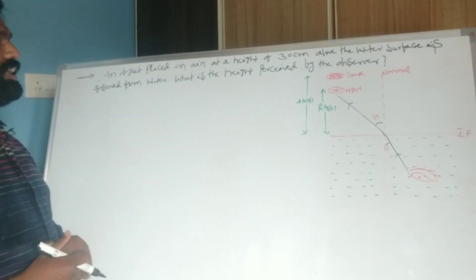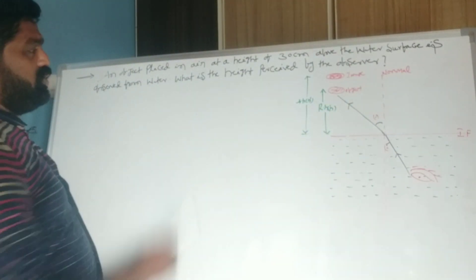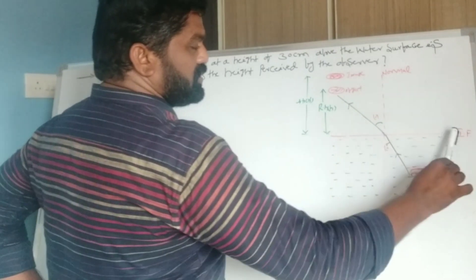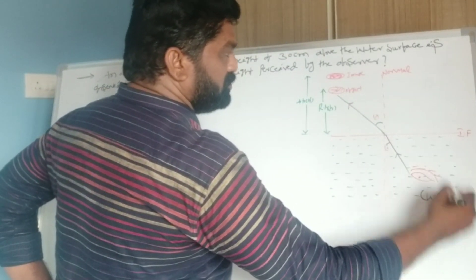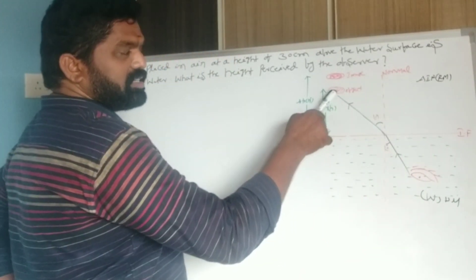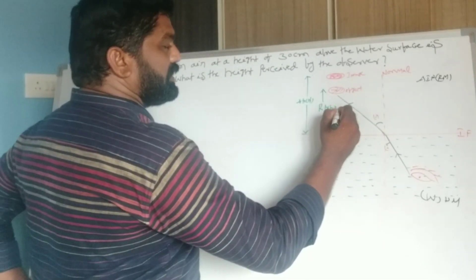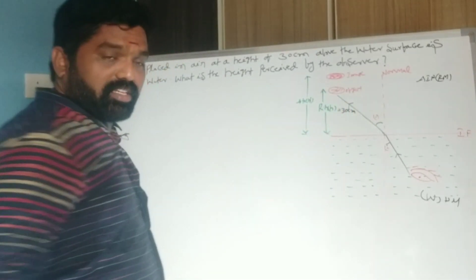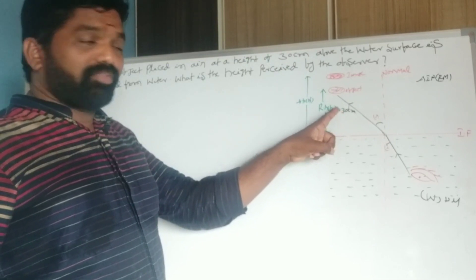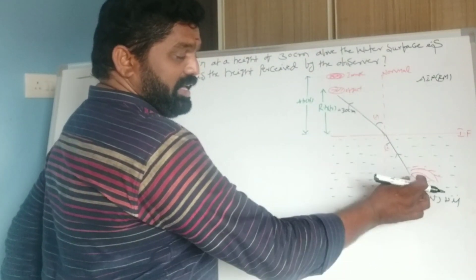Next problem: an object placed in air at a height of 30 centimeters above the water surface is observed from water. What is the height perceived by the observer? The interface separates water (denser medium) below and air (rarer medium) above. The object is in the rarer medium, the observer is in the denser medium. The real height is 30 centimeters.